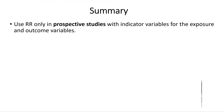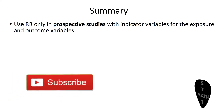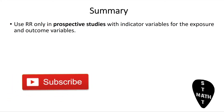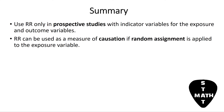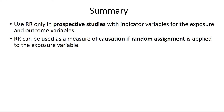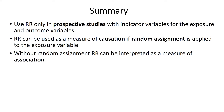Summary. Use relative risk only in prospective studies with indicator variables for the exposure and outcome variables. Relative risk can be used as a measure of causation if random assignment is applied to the exposure variable. Without random assignment, relative risk can be interpreted as a measure of association.